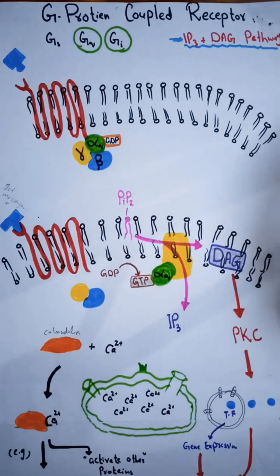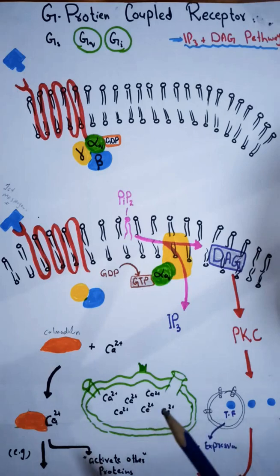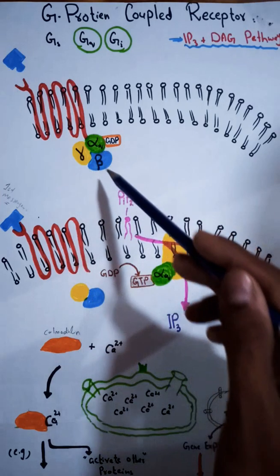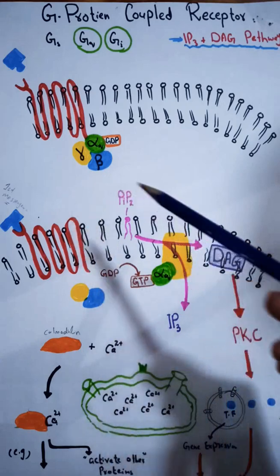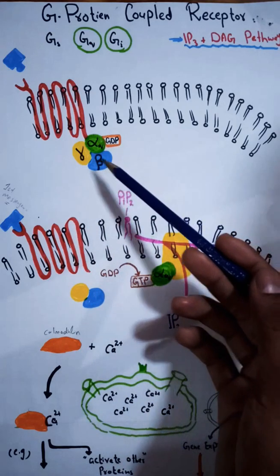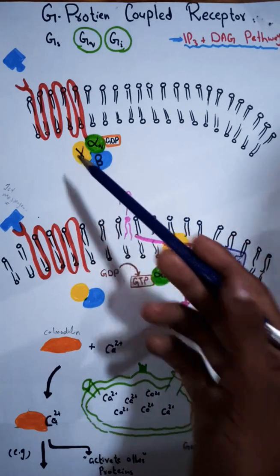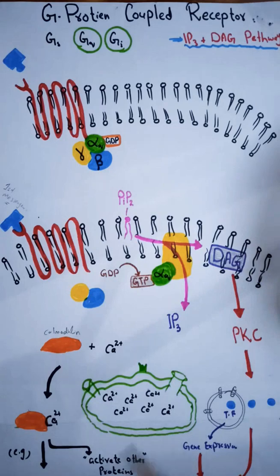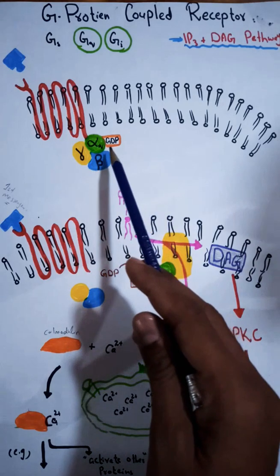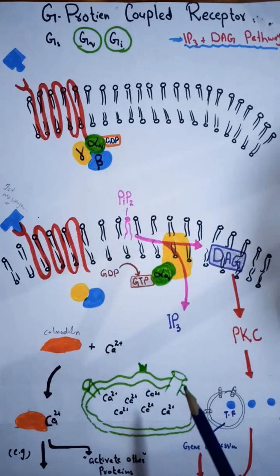This is the reason this receptor is called a G protein linked receptor or G protein coupled receptor. This G protein consists of three subunits: alpha subunit, beta subunit, and gamma subunit. The alpha subunit is also attached with a GDP molecule.